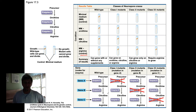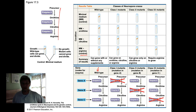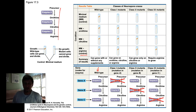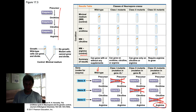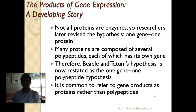Looking at the table: the wild type follows the original enzyme pathway. Class one mutants, if given ornithine, could go through the rest of the pathway to produce arginine. Class two mutants could grow if given citrulline but not if given only ornithine. Class three mutants could only grow if given arginine directly. From this, they concluded: class one mutants were missing enzyme A, class two were missing enzyme B, and class three were missing enzyme C — each representing a distinct mutation.